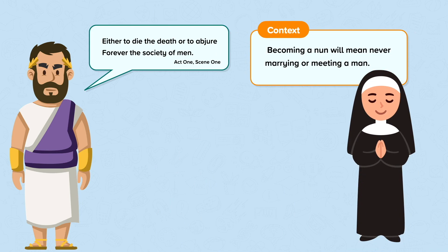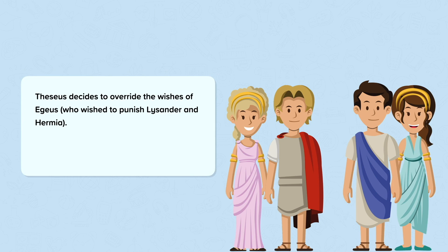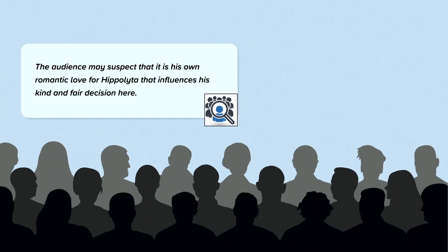Now let's consider the ending of the play, which is a happy one. At the end of the play, Theseus encounters the four young lovers — Helena, Hermia, Demetrius, and Lysander — sleeping in the forest. When the four young lovers are discovered, the two couples are now happily in love. Theseus decides to override the wishes of Aegeus, who wished to punish Lysander and Hermia. Instead, he will allow the two young couples to wed who they wish. You could argue that this is a romantic decision, and the audience may suspect that it is his own romantic love for Hippolyta that influences his kind and fair decision here.